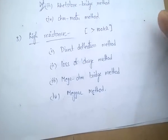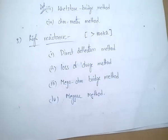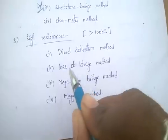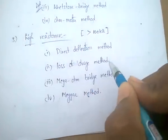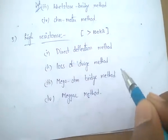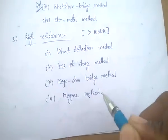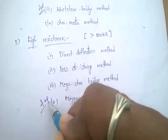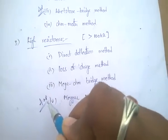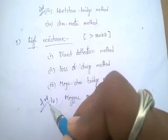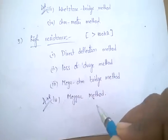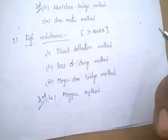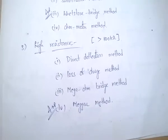Next, high resistance. There are mainly four methods: direct deflection method, loss of charge method, mega ohm bridge method, and megger method. Megger method is very, very important. Megger is an instrument used to measure high resistance.